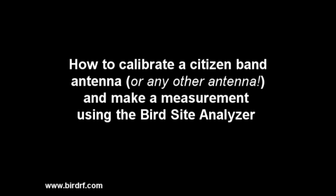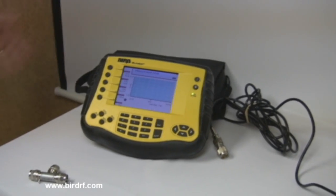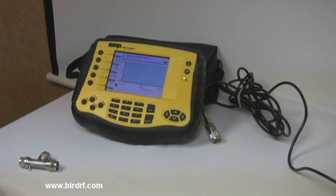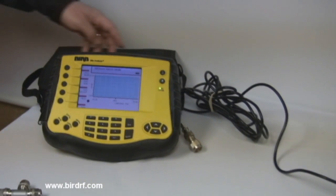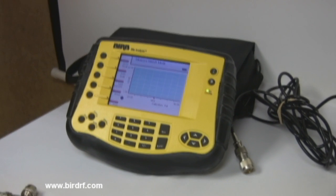How to Calibrate a Citizen's Band Antenna and Make a Measurement Using the BIRD Sight Analyzer. Before we get started, it is important to calibrate the instrument. Why? Because the calibration process characterizes the sight analyzer test port based on the frequency of operation.